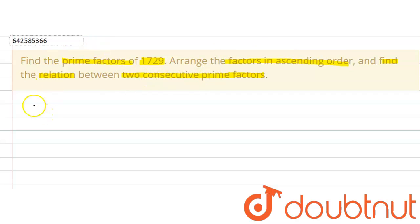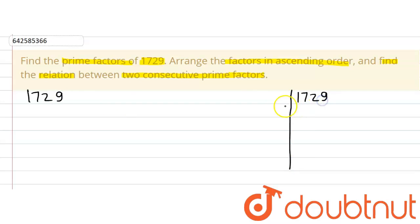The number that we are given is 1729. Let's do its prime factorization. The first prime number is 2. 1729 is not divisible by 2.